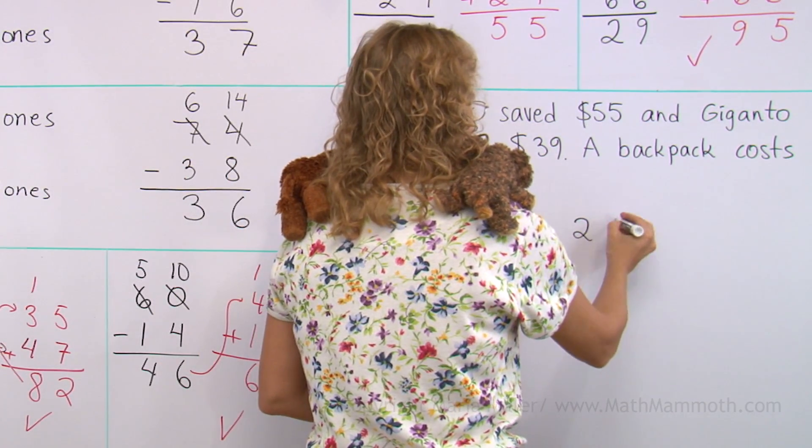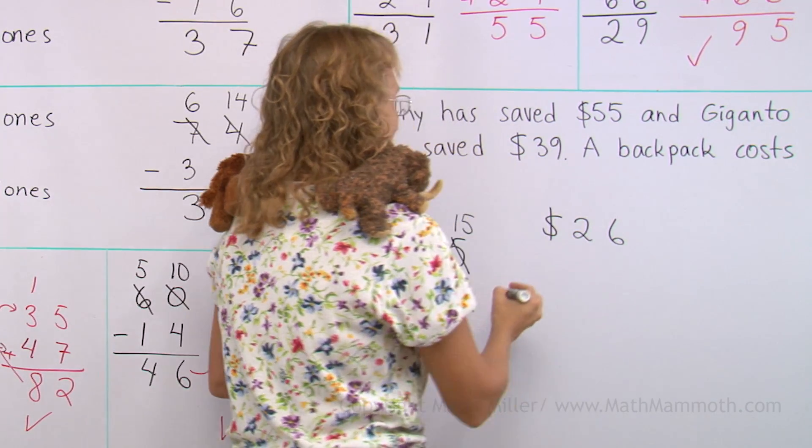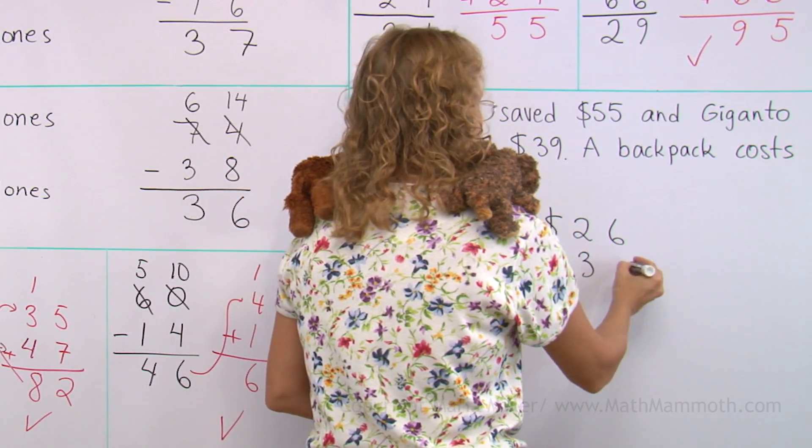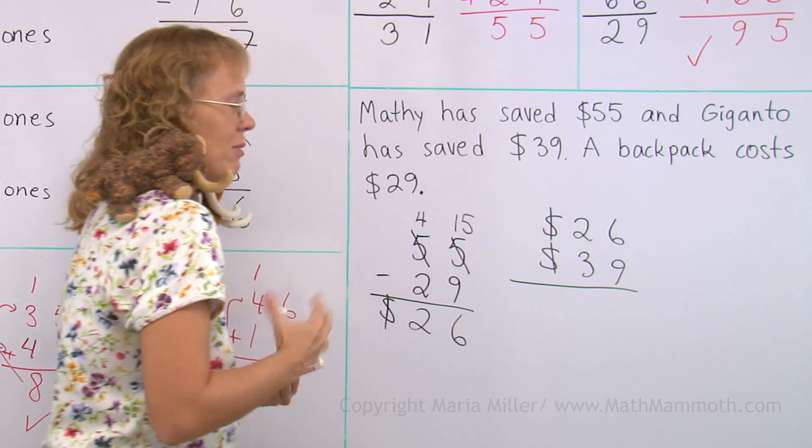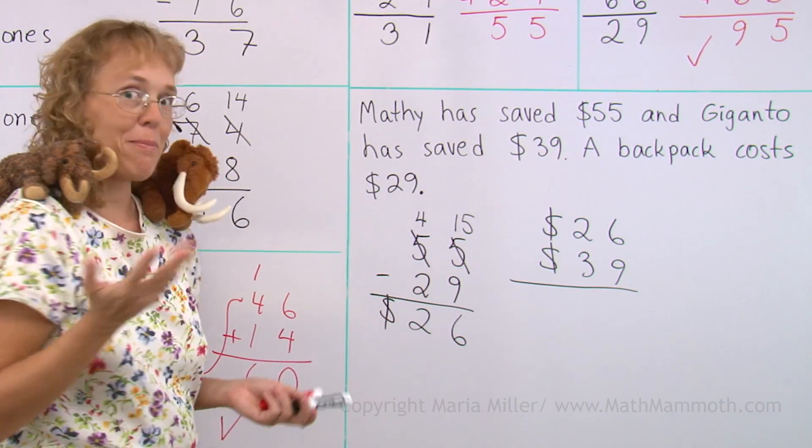Matthew has $26 after he bought the backpack. Giganto still has $39, so we'll check how much they have together. Maybe that would be enough to go camping.